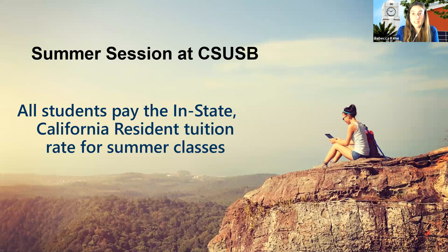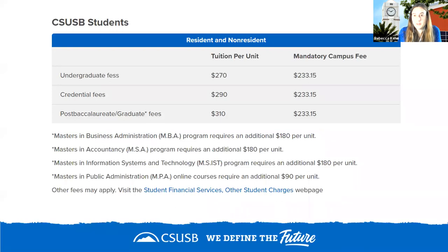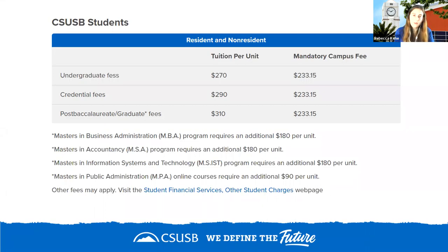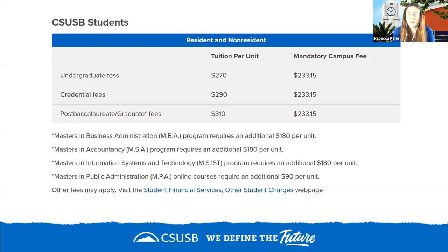To compare: during fall and spring, non-resident tuition adds approximately $400 USD per credit unit on top of the base tuition. During summer, that $400 non-resident fee is not charged, so students save considerably. Many students choose to take online summer courses from home to save money and get ahead in their degree. This is something to consider when planning your studies at CSUSB.